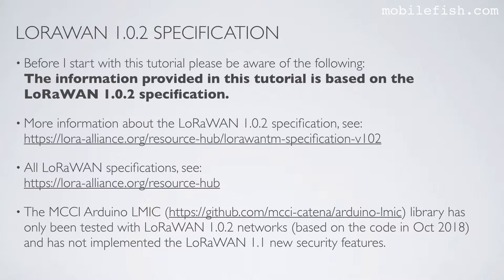The MCCI Arduino LMIC library has only been tested with LoRaWAN 1.0.2 networks. This is based on the code in October 2018 and has not implemented the LoRaWAN 1.1 new security features.